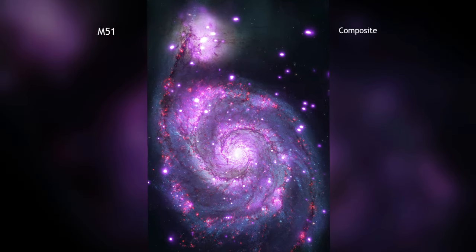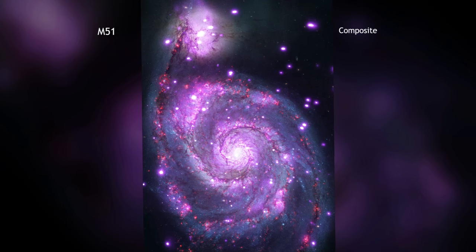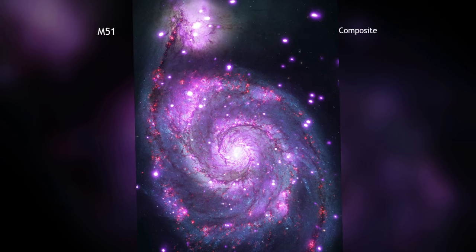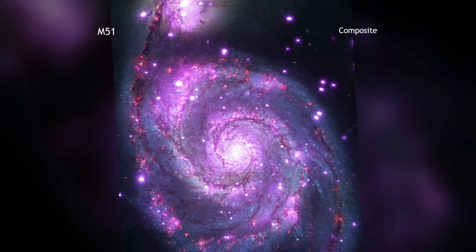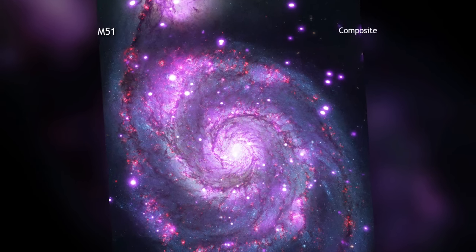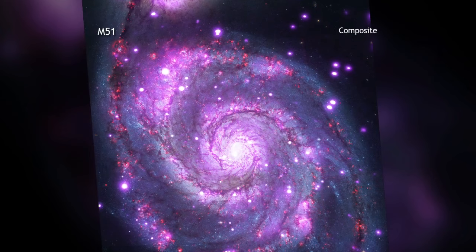The galaxy Messier 51 is perhaps better known by its nickname, the Whirlpool Galaxy. Like the Milky Way, the Whirlpool is a spiral galaxy with spectacular arms of stars and dust.